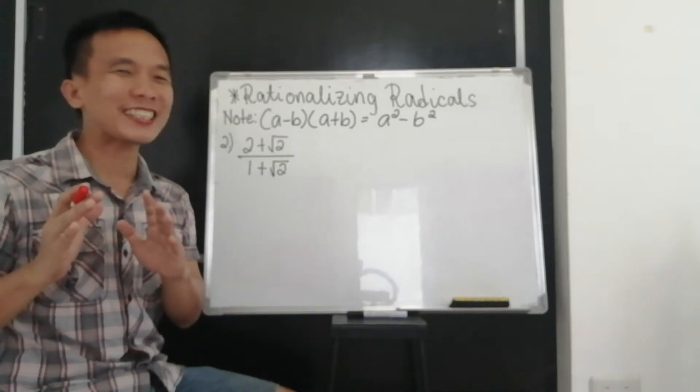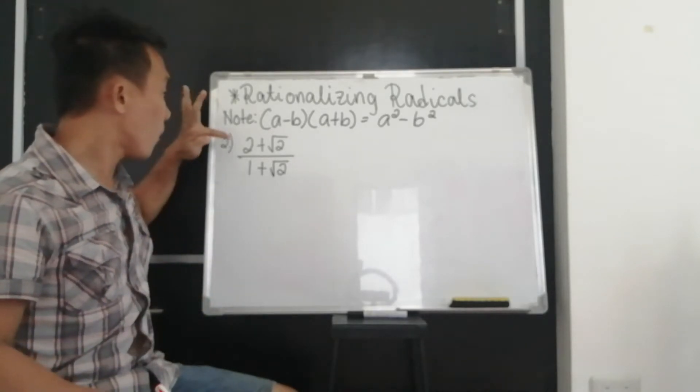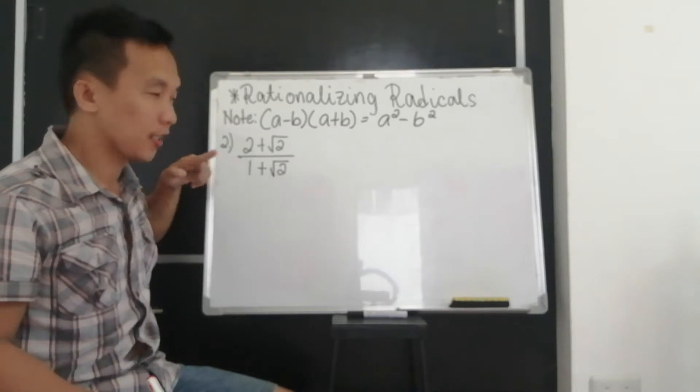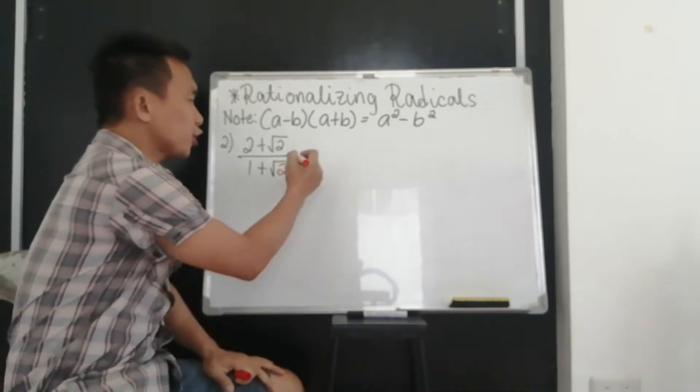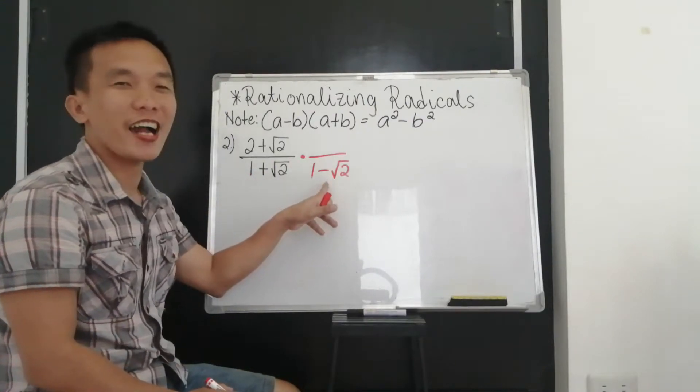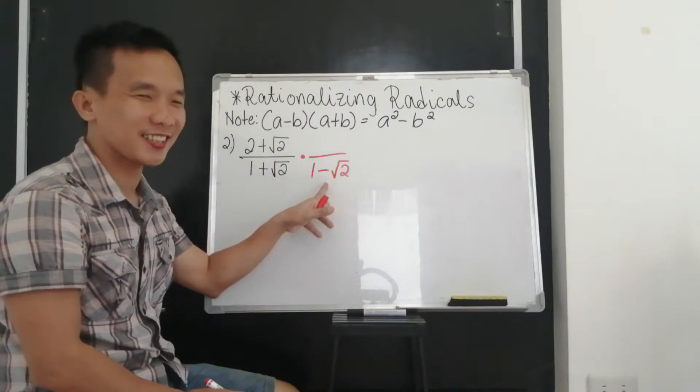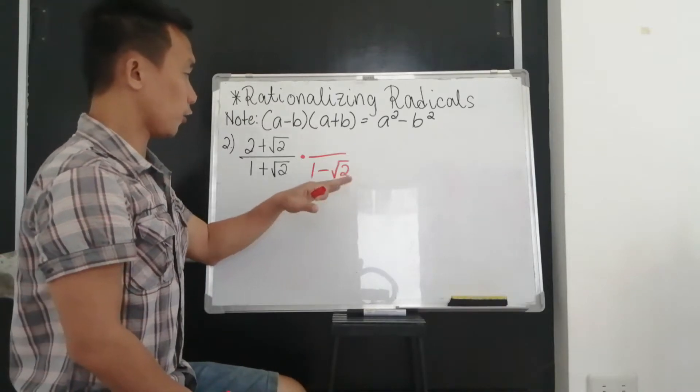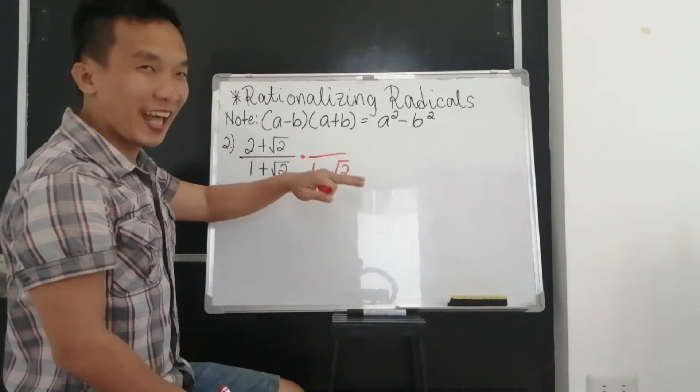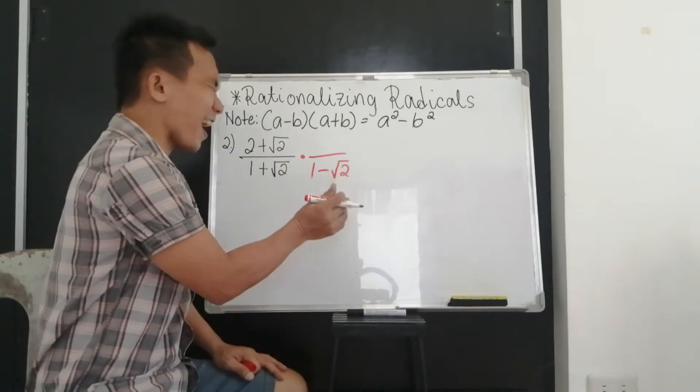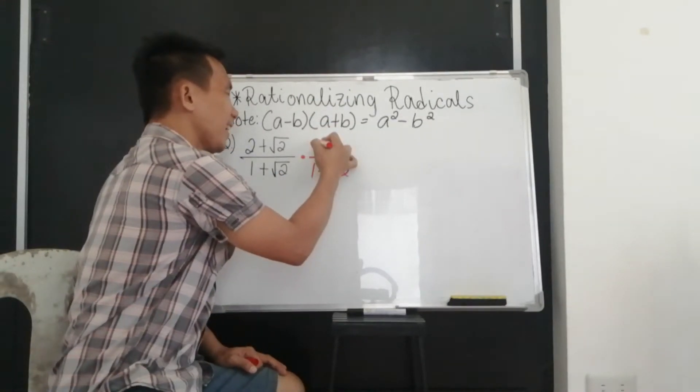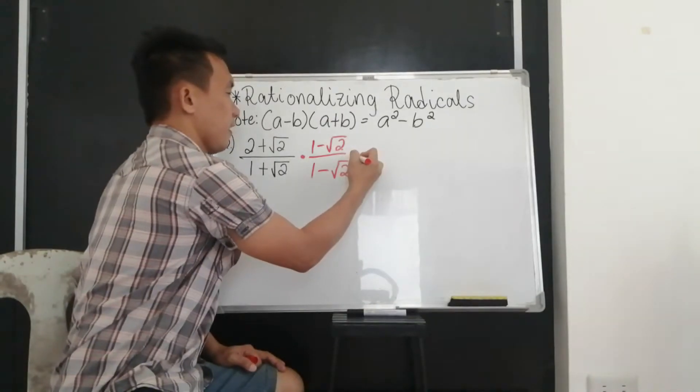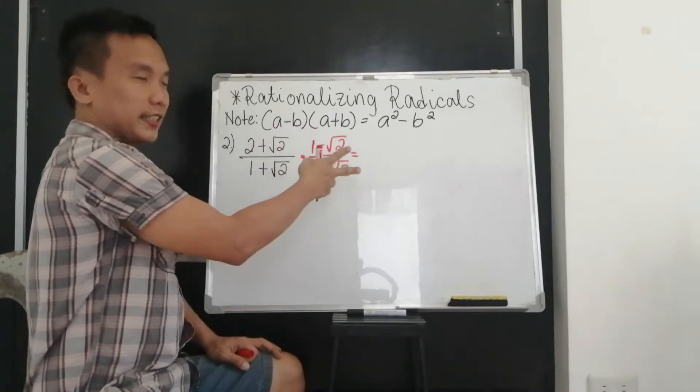So now let's have a more challenging example. We have a binomial divided by a binomial. So again, for conjugates, since this is a positive, you are going to multiply its conjugate, which is 1 minus square root of 2. So whatever you multiply in your denominator, multiply also in your numerator. And after that, simply multiply.